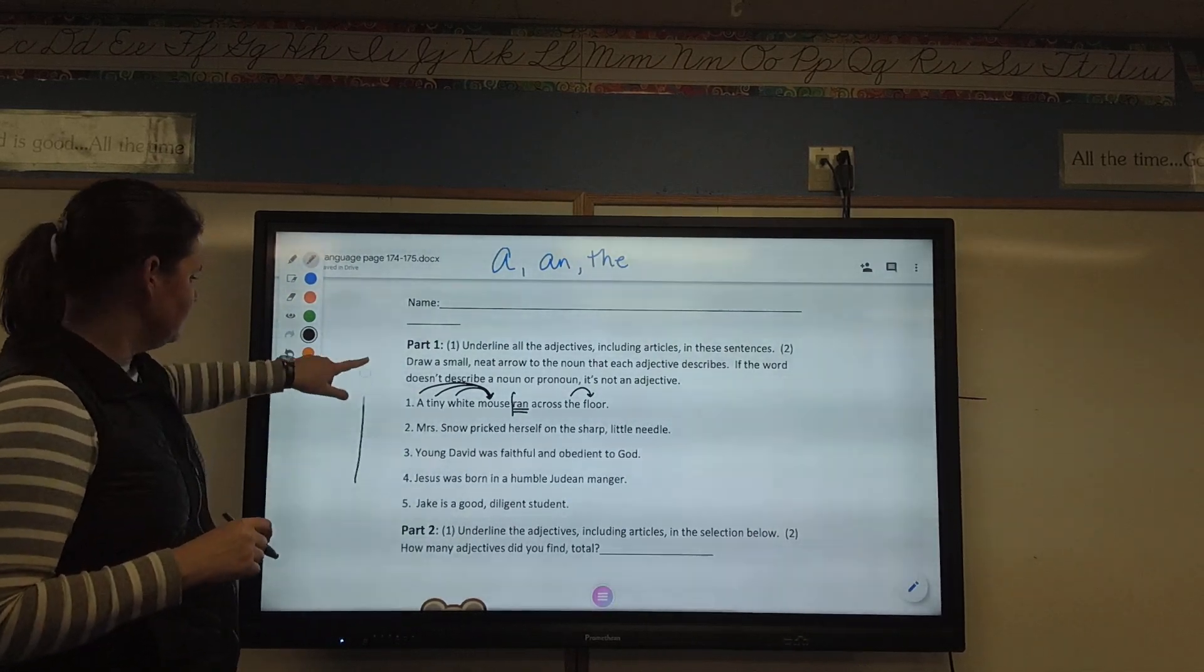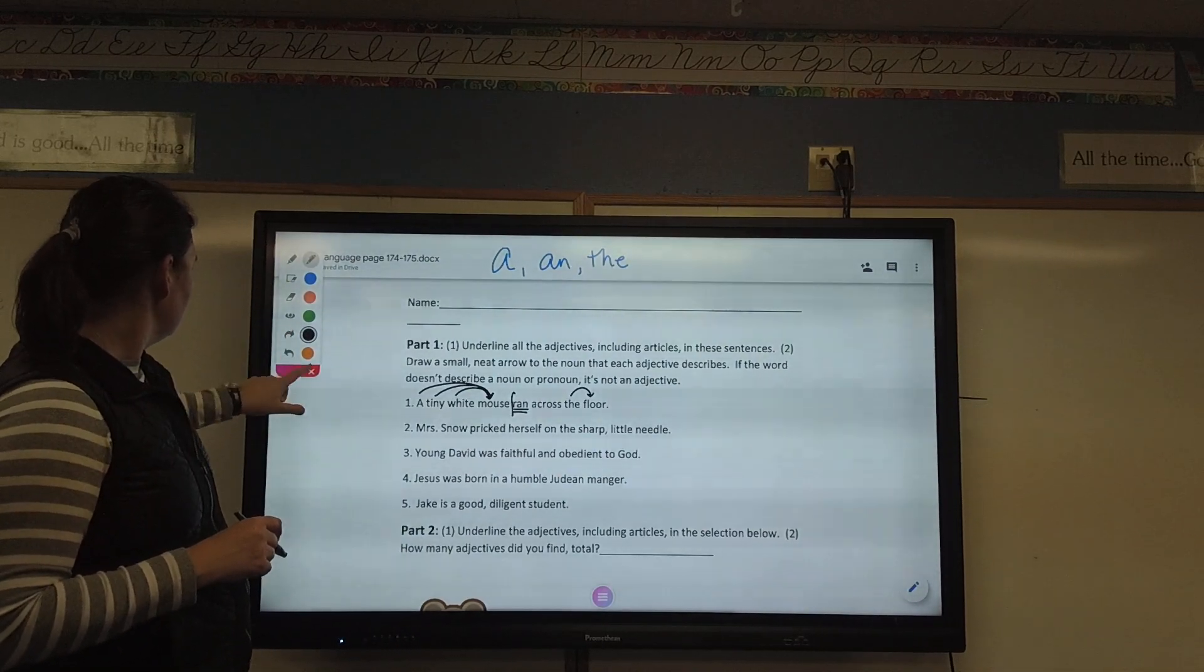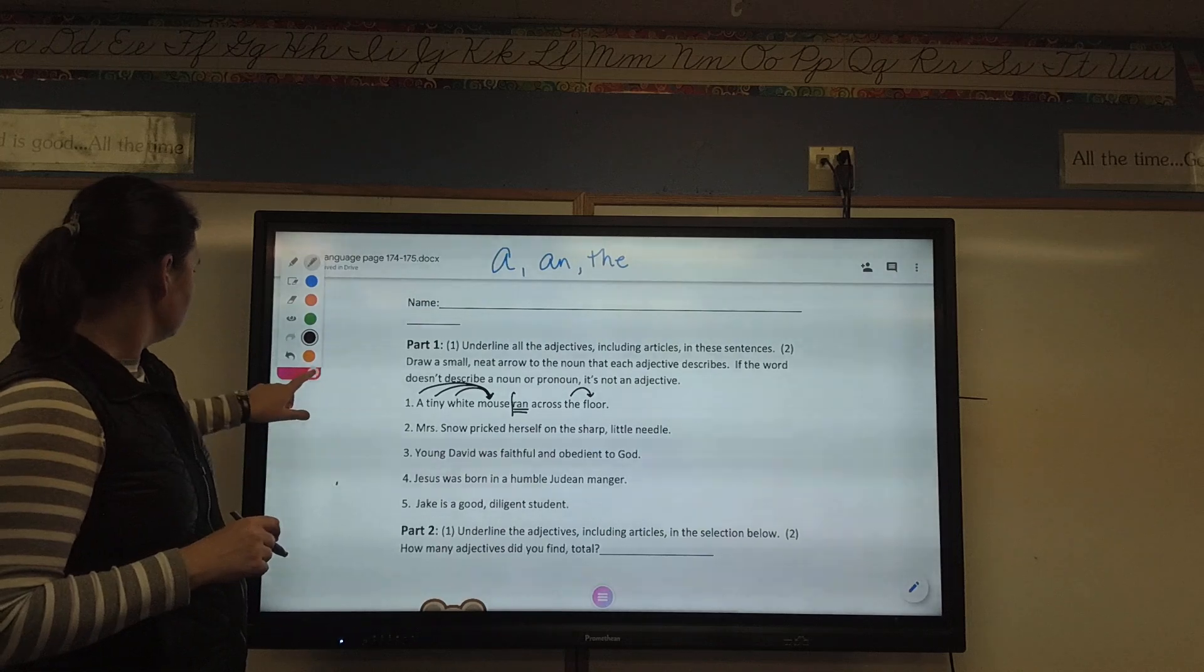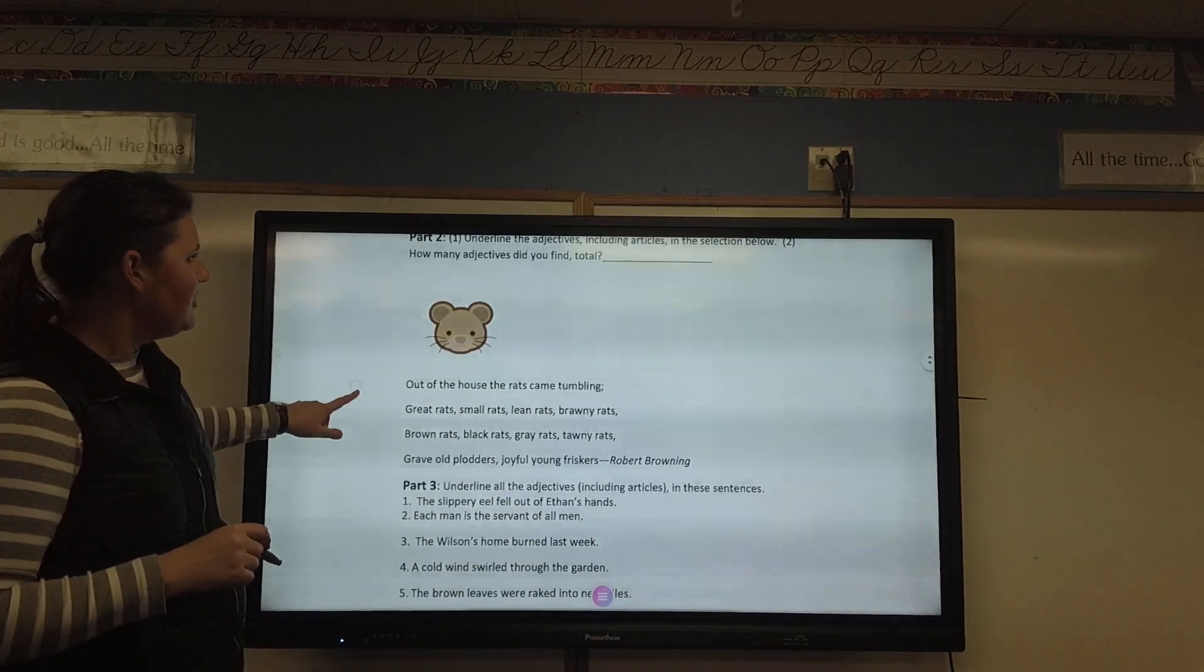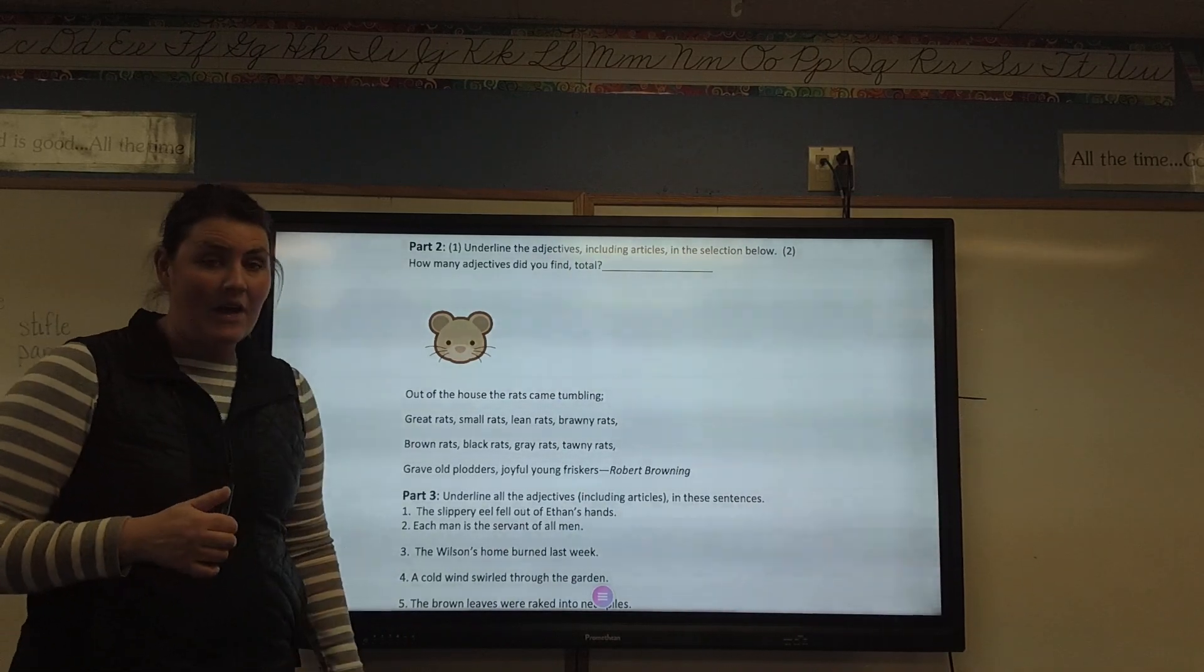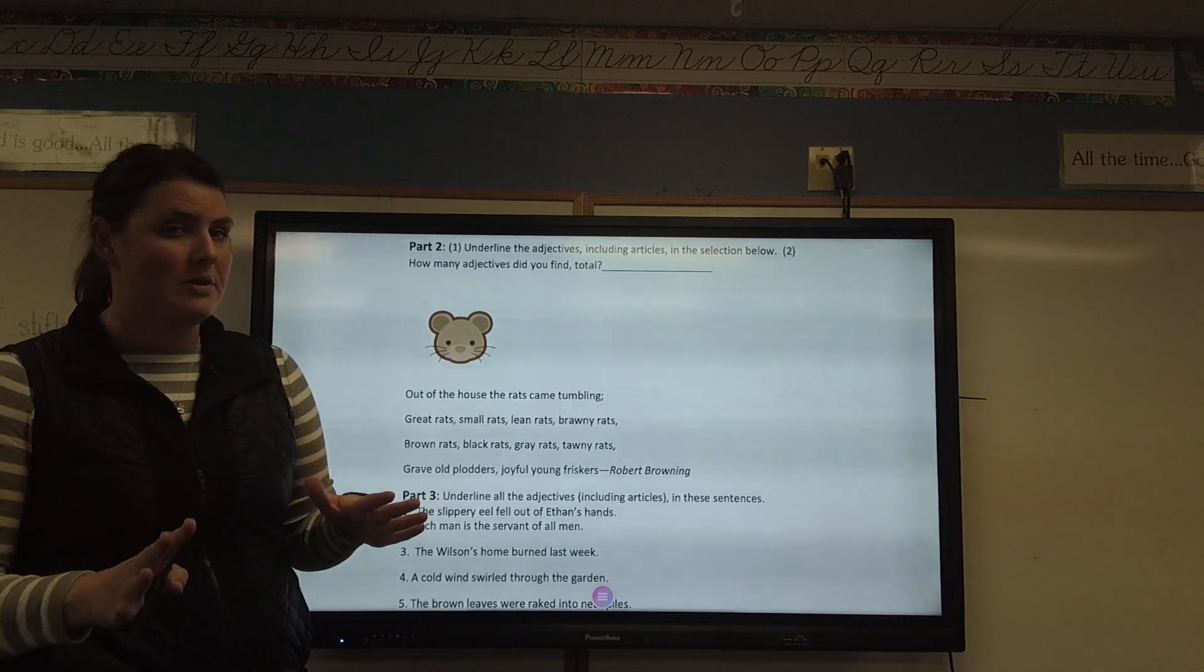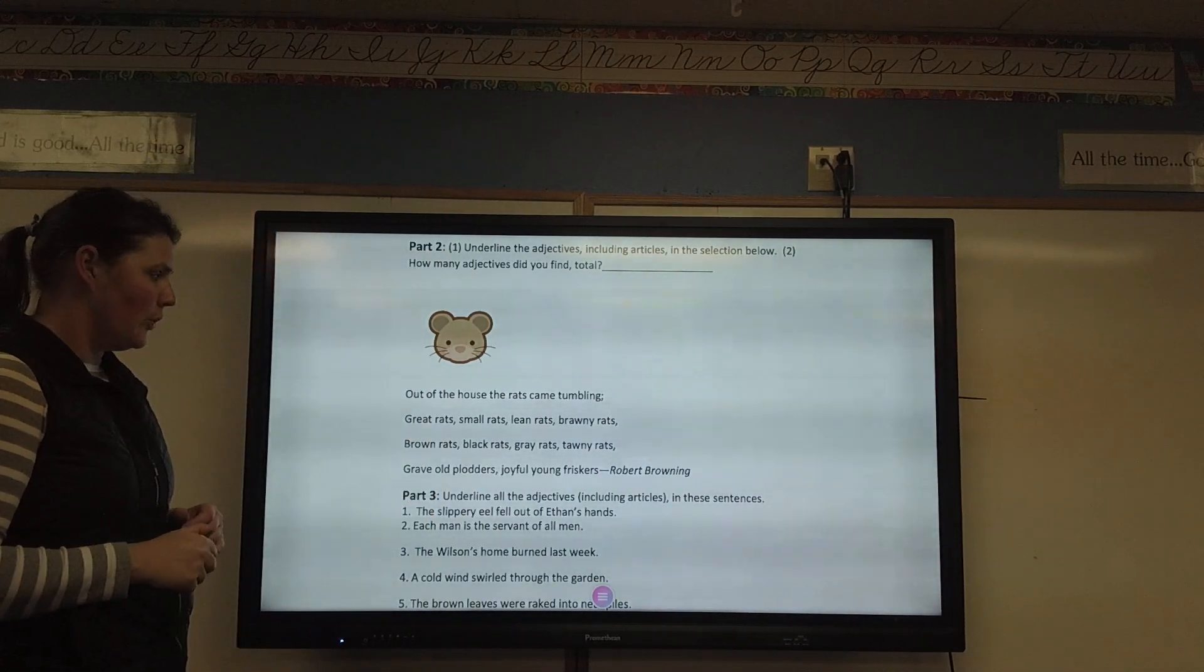So, let's move up to part two. Underline the adjectives, including articles, in the selection below. Again, articles are a, an, and the, those three words that are always going to be a noun. Now, how many adjectives did you find total?